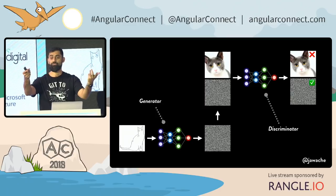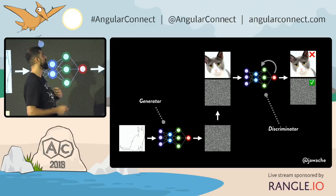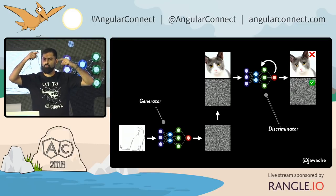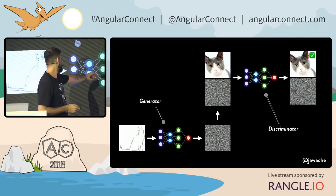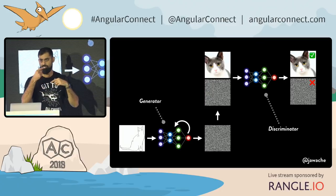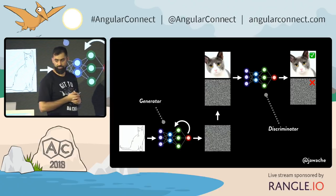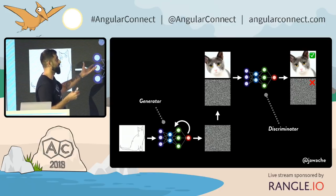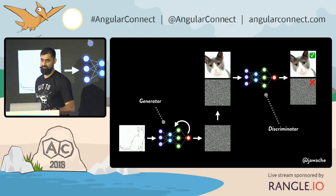But the discriminator itself won't be very good at first either, because its weights are also randomly generated. So at the start, the discriminator might say the static is a real cat and the real cat is not. When the discriminator gets it wrong, you backpropagate and tune its weights. When the discriminator gets it right but the generator is not producing good images, you backpropagate the generator to produce better cat images.